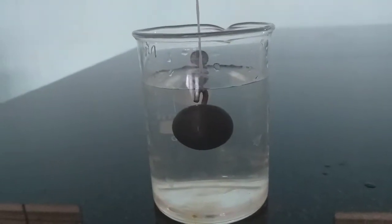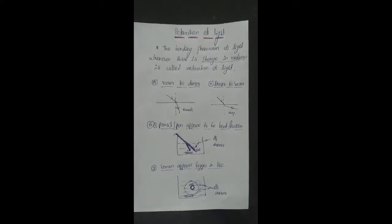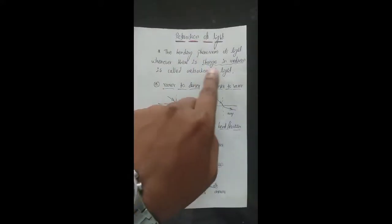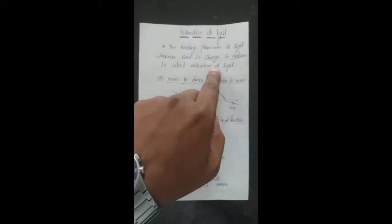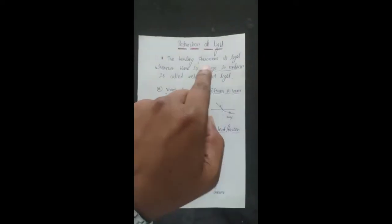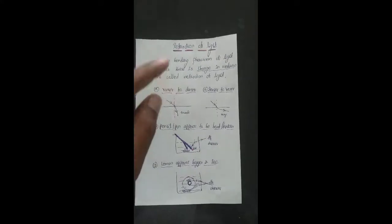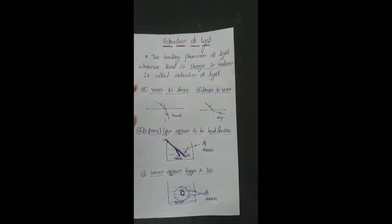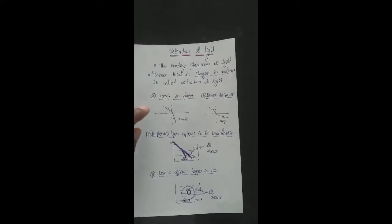All these phenomena are because of refraction of light. Refraction of light means the bending of light whenever there is a change in medium. So when a light ray is moving and there is a change in medium, the light ray bends because the speed of light changes.